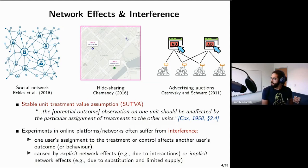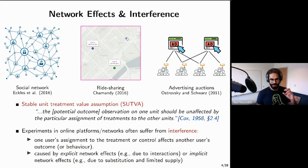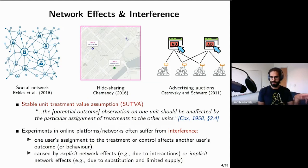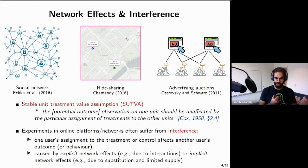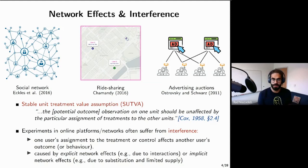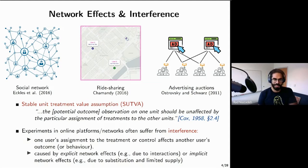SUTVA is very strong, and in most applications—including online platforms and networks—this assumption simply doesn't hold because of a phenomenon called interference. Interference is exactly the opposite: we say we have interference when the assignment of one user to treatment or control can affect the outcome of another user under the experiment. This interference can happen because of explicit network effects. For example, in a social network like Facebook, if you modify the news feed of one user, the friends of that user probably have different behavior.